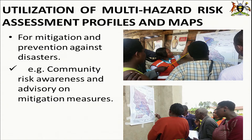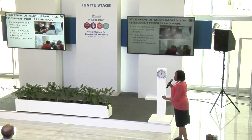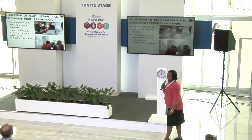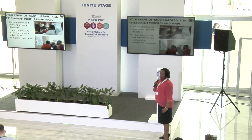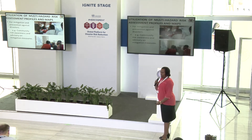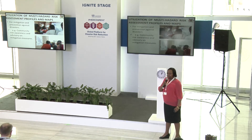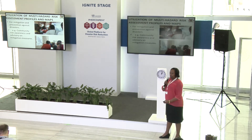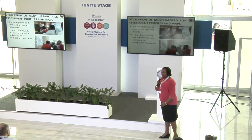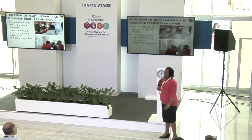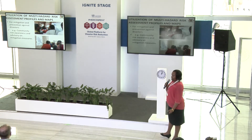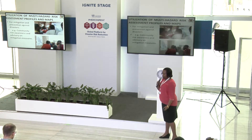How do we utilize the risk assessment products? We do community awareness — we raise awareness of communities about the risk. The photos indicate how we were sensitizing communities about flooding. We receive weather forecasts from the Uganda National Meteorological Authority, and we go down to the communities to sensitize them using the risk profiles of what is expected in their communities.